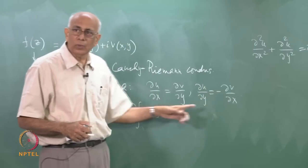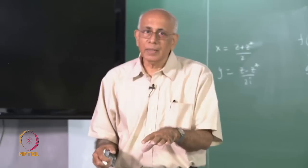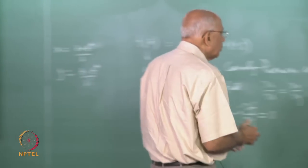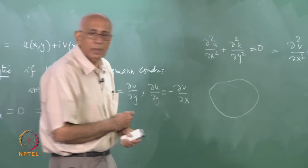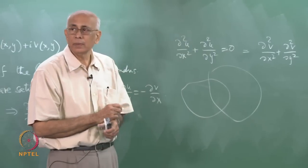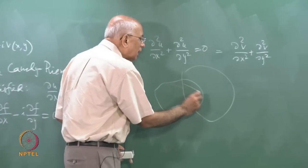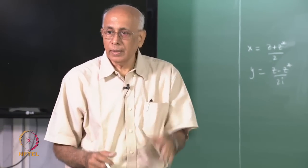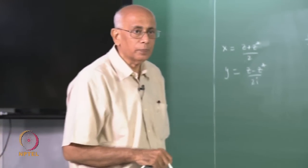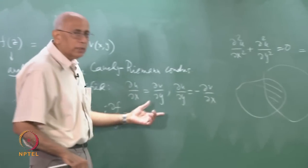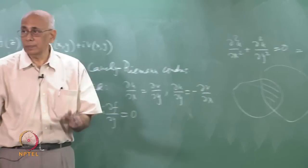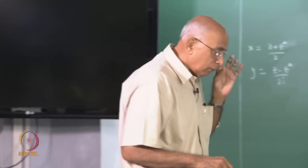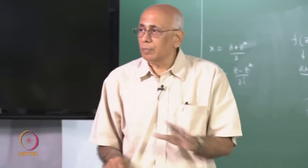In some sense if you give me the real part, the imaginary part is more or less determined by solving the Cauchy-Riemann conditions. If u is harmonic in some region and v is harmonic in some region, then u + i v is guaranteed to be an analytic function in the intersection of those two regions. If a function is analytic in the whole of the finite complex plane it is called an entire function.